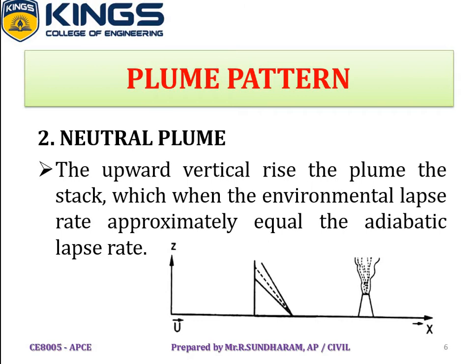The neutral plume is the upward vertical rise of the plume from the stack. It occurs when the environmental lapse rate is approximately equal to the adiabatic lapse rate. The upward movement of the plume continues until the plume density equals the air density, and that condition is called a neutral plume.